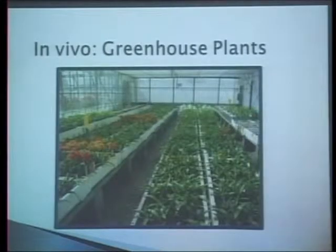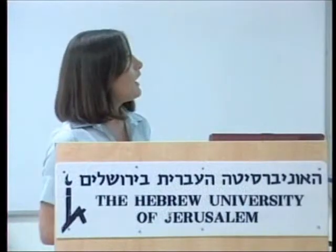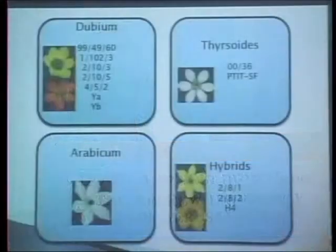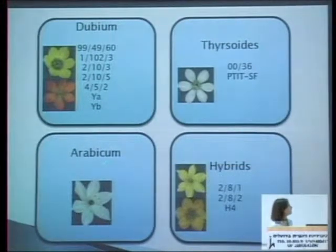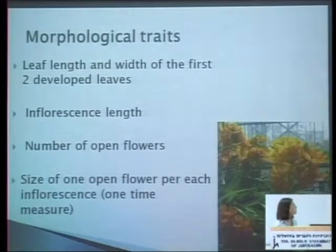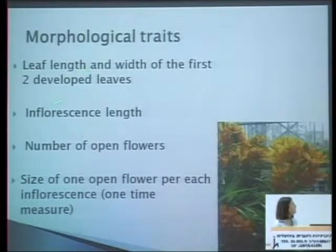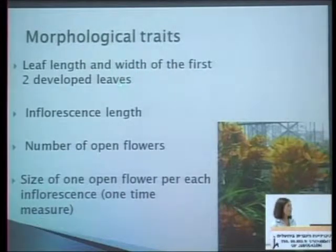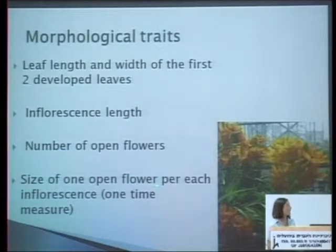The first part involved greenhouse plants grown in a polycarbonate greenhouse. Thirteen lines were used, divided into four different groups depending on species: Dubium, Tirsoides, Arabicum, and some hybrids. The first experiment was measurement of morphological traits, performed for three months, twice a week. We measured leaf length and width of the first two developed leaves, to see if there was some correlation with the development of the inflorescence and the flowering, the inflorescence length, number of open flowers, and the size of one open flower per each inflorescence.